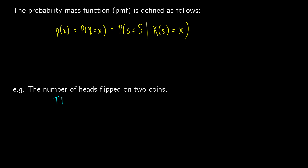We have different outcomes: tails-tails, heads-tails, and heads-heads. So let's say we get our random variable X, and we call this the number of heads. What we can do is ask ourselves what different values we can have. In this case we're either going to have 0, 1, or 2.